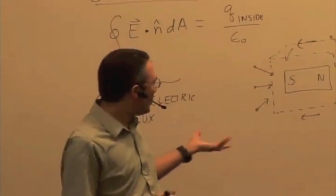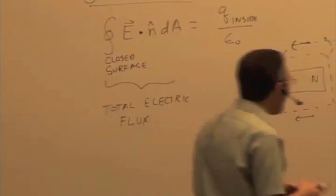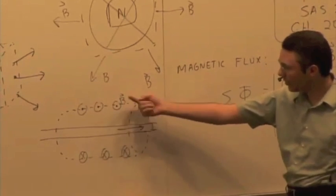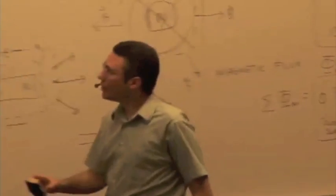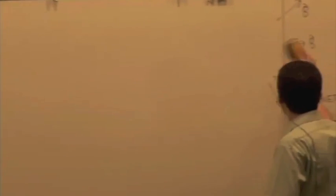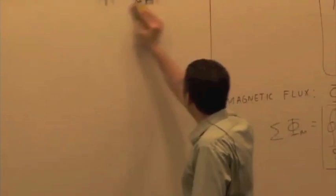Magnetic fields tend to have a particular pattern — either a dipole pattern or a circular pattern when we're looking at currents. There's another way we can deal with the patterns of magnetic field in space. Rather than looking at fields over an area, we're now going to focus on looking at fields on a path, which is something we've actually done before with electric fields.